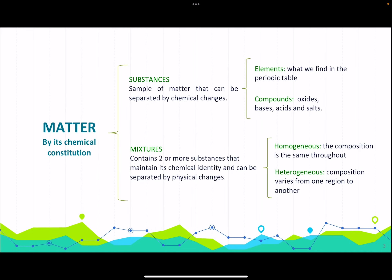Matter can be divided — and this is a simplified view — into substances. Substances can be divided into elements and compounds. A substance is a sample of matter that can only be separated by chemical changes. Elements are what we find in the periodic table. When elements react and bond together, they make compounds.